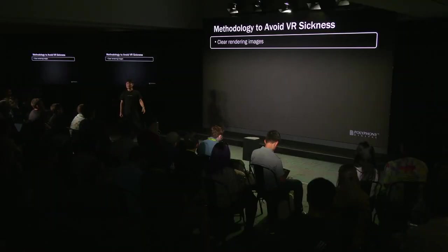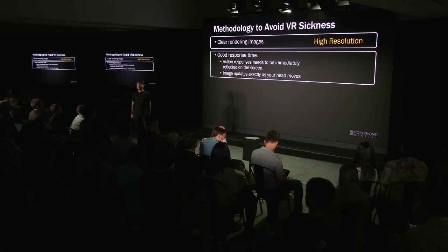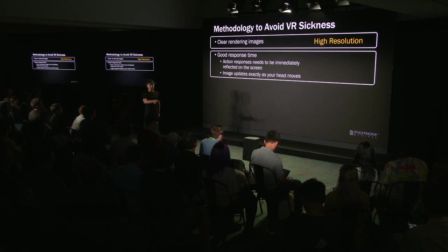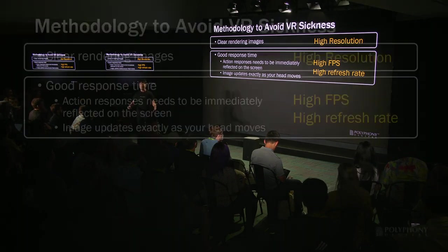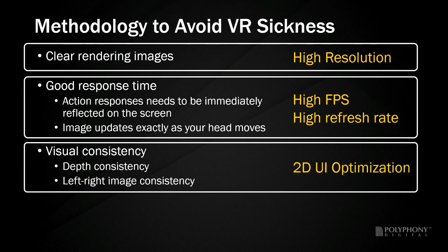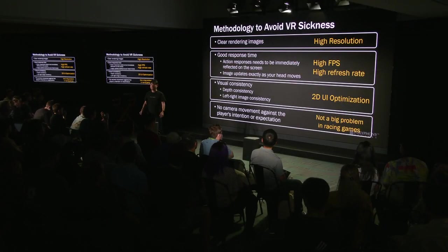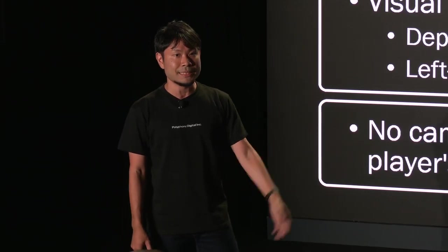This slide presents our methodology to avoid VR sickness. First, a clear rendered image is required — it must be high resolution. Next, response time must be good; user actions must be immediately reflected on the screen, and it needs to follow the user's head movements. Therefore, high FPS and high refresh rates are required. Furthermore, there must be visual consistency such as depth and correct image consistency. This is achieved by optimizing the user interface. Finally, the camera should not move against the user's intentions. Fortunately, this is not a big problem in racing games. As you can see, a lot of rendering performance and game design are constrained, so it's quite difficult for existing games to support VR later.